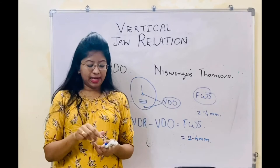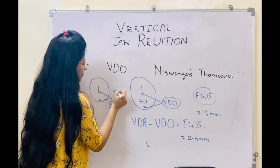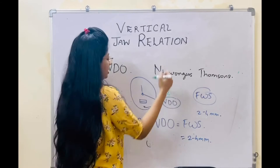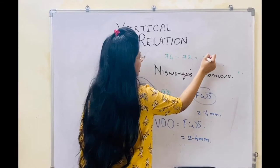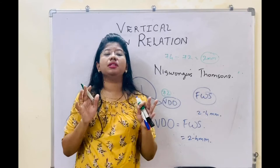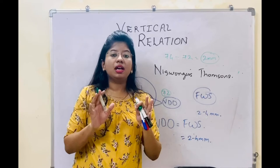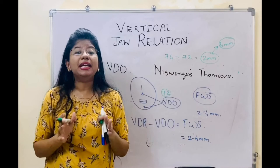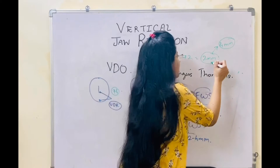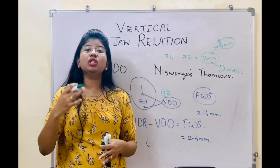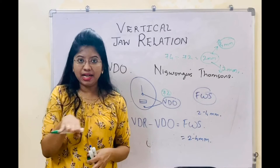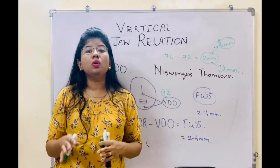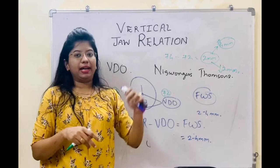In the Niswonger's method: vertical dimension at rest minus vertical dimension of occlusion equals freeway space. For example, if the vertical dimension at rest is 74 mm and the vertical dimension of occlusion is 72 mm, the difference is 2 mm — which is within the range of 2 to 4 mm, meaning your vertical dimension is correct. If the freeway space is more than 4 mm, the vertical dimension is less; if it is less than 2 mm, the vertical dimension is more. You then adjust the rim height accordingly.